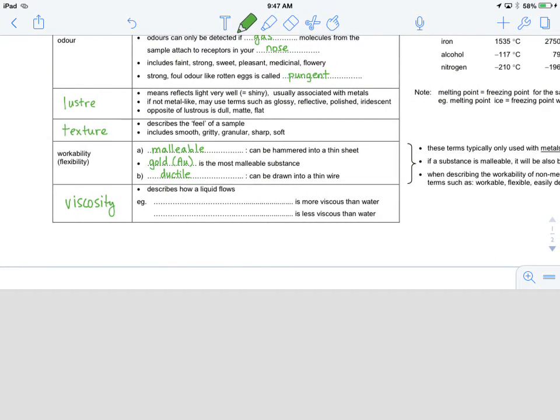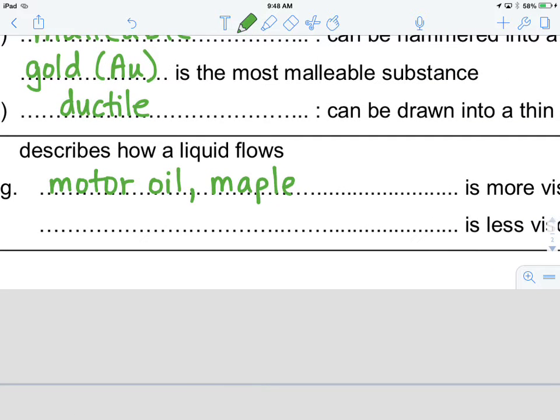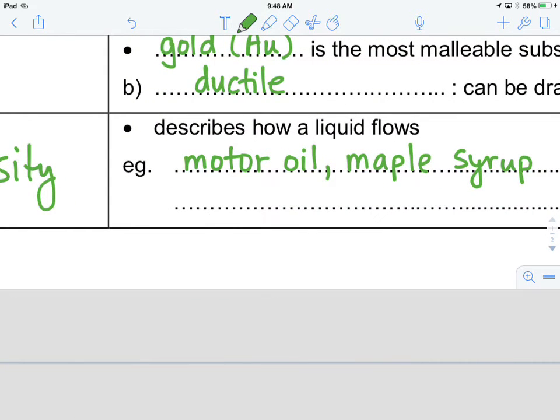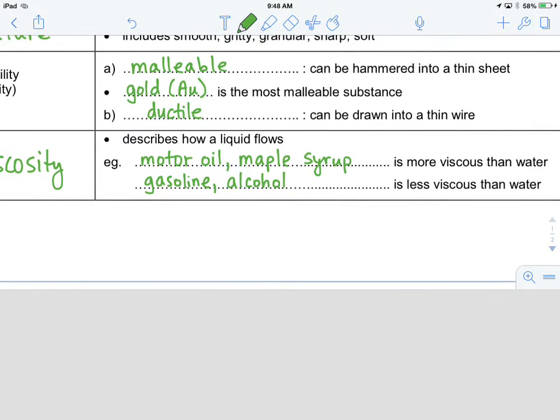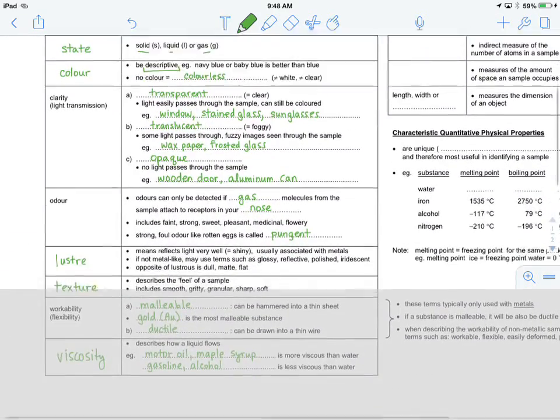So something like motor oil or maple syrup is more viscous than water, which means it doesn't flow as easily as water does. Other things that flow more readily than water are things like gasoline or alcohol. These are less viscous than water and they flow much easier. So these are our qualitative physical properties.